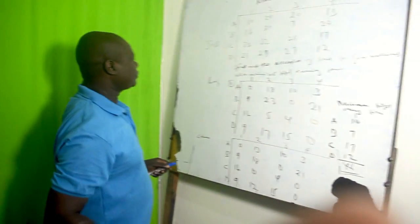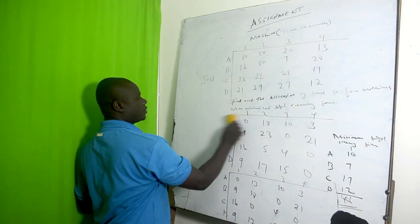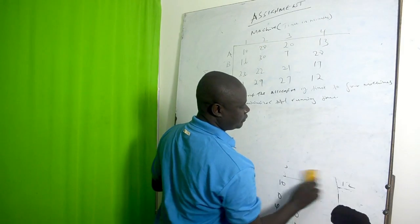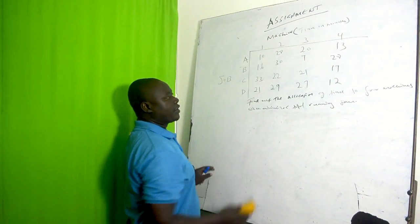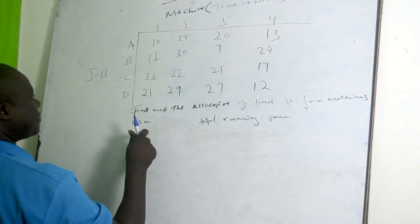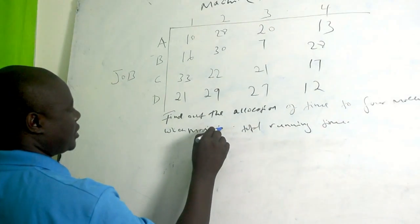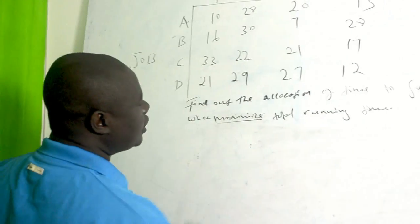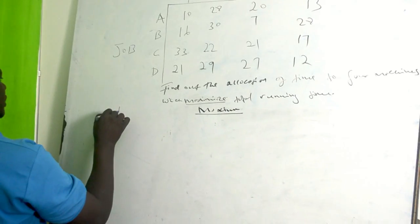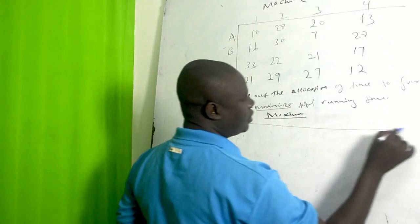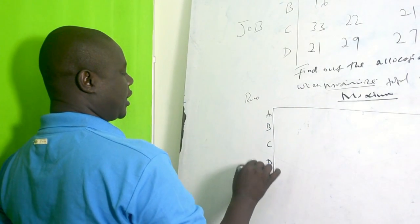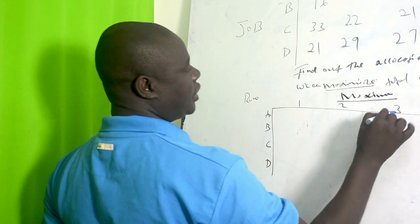Now let's look at maximization. The previous example was minimization. Now the question becomes: find the allocation of time to four machines which maximize. We draw the table again with A, B, C, D and machines 1, 2, 3, 4.